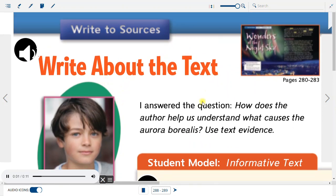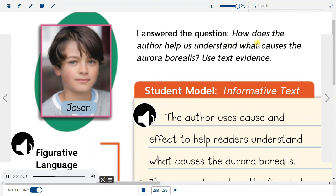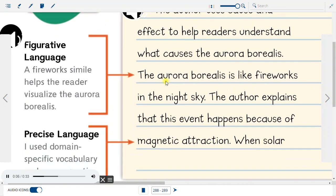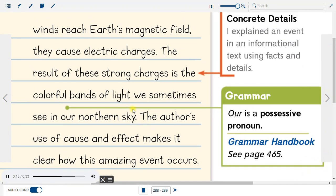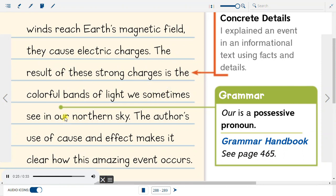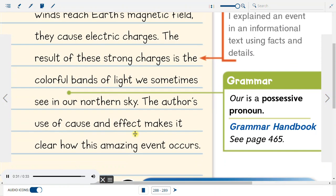Write about the text. I answered the question, How does the author help us understand what causes the aurora borealis? The author uses cause and effect to help readers understand what causes the aurora borealis. The aurora borealis is like fireworks in the night sky. The author explains that this event happens because of magnetic attraction. When solar winds reach Earth's magnetic field, they cause electric charges. The result of these strong charges is the colorful bands of light we sometimes see in our northern sky. The author's use of cause and effect makes it clear how this amazing event occurs.